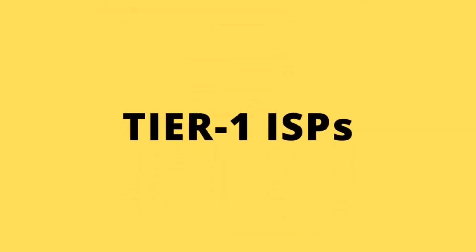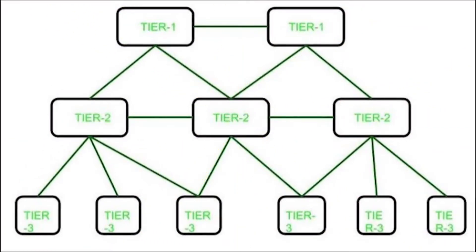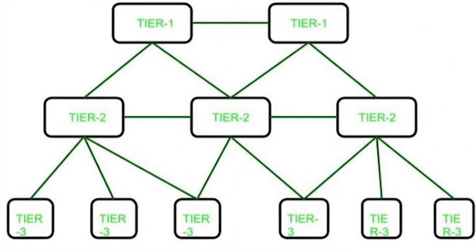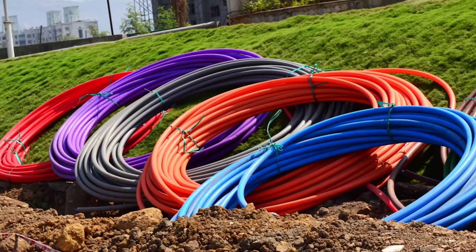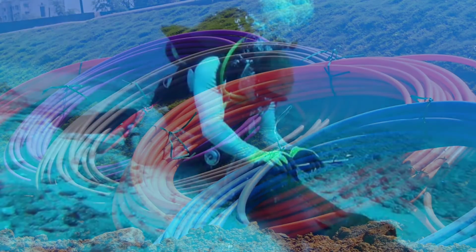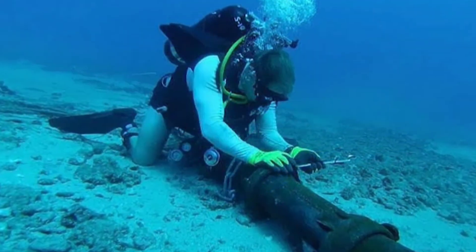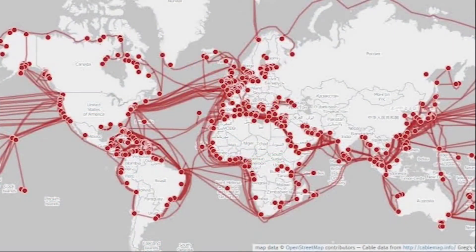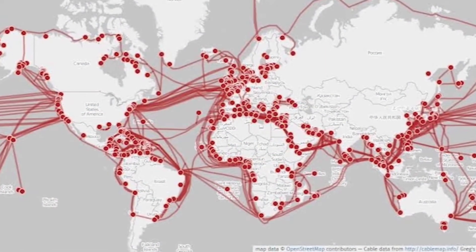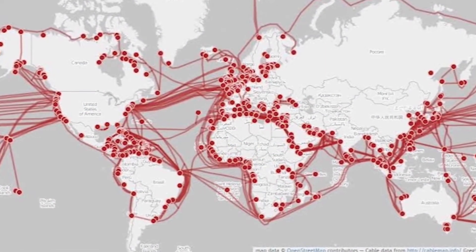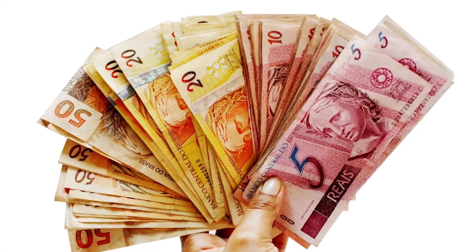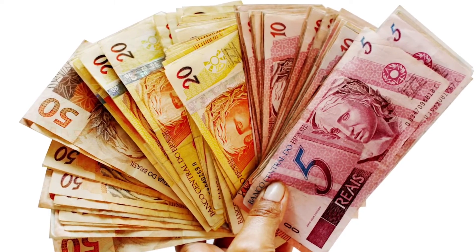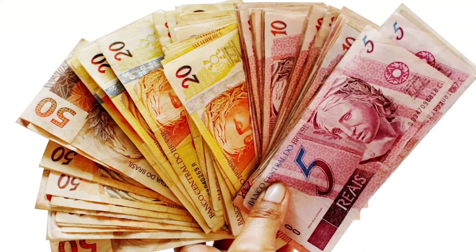What are Tier 1 ISPs? They stand at the top in the hierarchy of ISPs. Tier 1 ISPs take care of installing the optical fiber cables under the sea and make sure to connect these cables to each and every country in the world. Hence, the major part of your internet subscription fee goes to the Tier 1 ISPs.